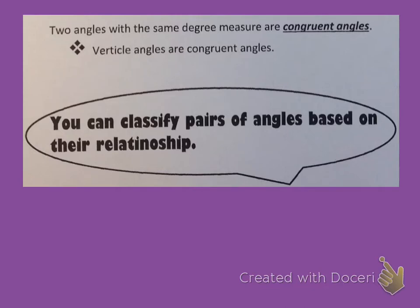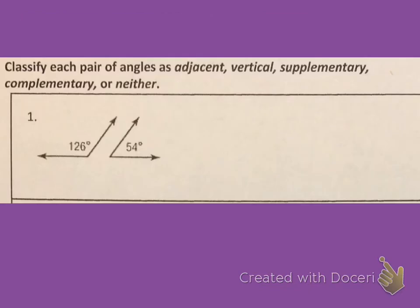Two angles with the same degree measure are congruent angles. Vertical angles are congruent angles. We can classify pairs of angles based on their relationship — as adjacent, vertical, supplementary, complementary, or neither.